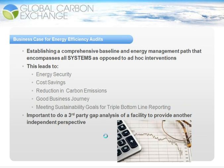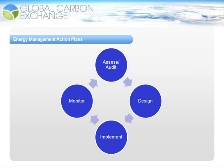An energy efficiency program is not a linear program, but a much more circular one. You initially begin by assessing your current energy state through an energy efficiency audit. The outcomes of your audit form your energy management action plan, which incorporates designs that need to be implemented. Once you have implemented your energy management action plan, you then begin to monitor your energy savings to identify whether you have achieved significant savings and what the financial implication of that is.